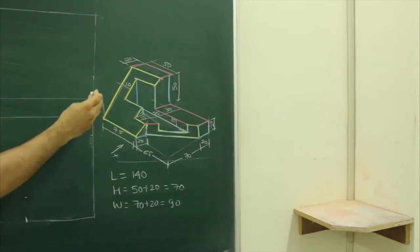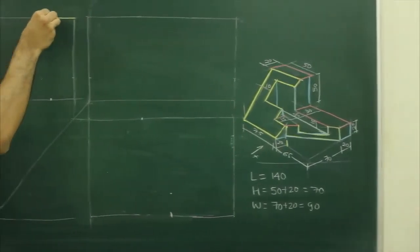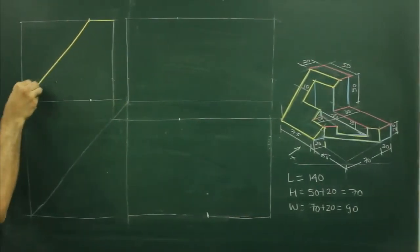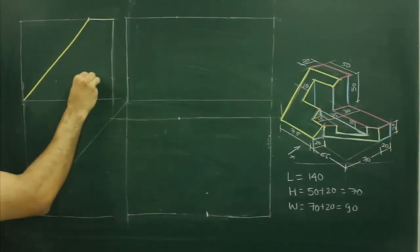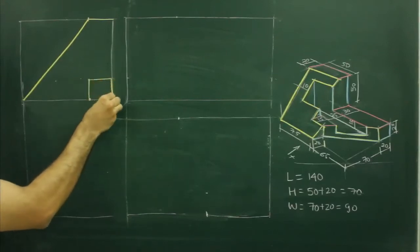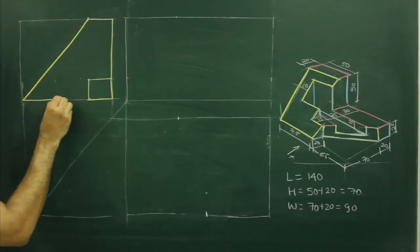From side view when you see the slope it will appear as a line, so we will start from side view. First we will take 20 from here and join this, that is the entire slope. After that they have given 20 by 20, so we can draw it over here and we can draw this line dark as well as this line dark.